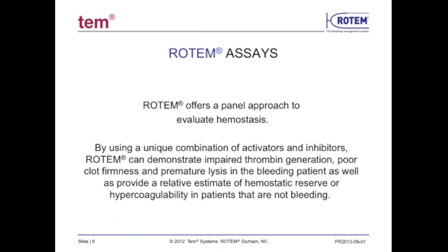Because bleeding in the clinical setting is often multifactorial, Rotem offers a panel approach to evaluate hemostasis imbalance and to guide transfusion therapy. By using a unique combination of activators and inhibitors, Rotem can demonstrate impaired thrombin generation, poor clot firmness, and premature lysis in the bleeding patient, as well as provide a relative estimate of hemostatic reserve or hypercoagulability in patients that are not bleeding.